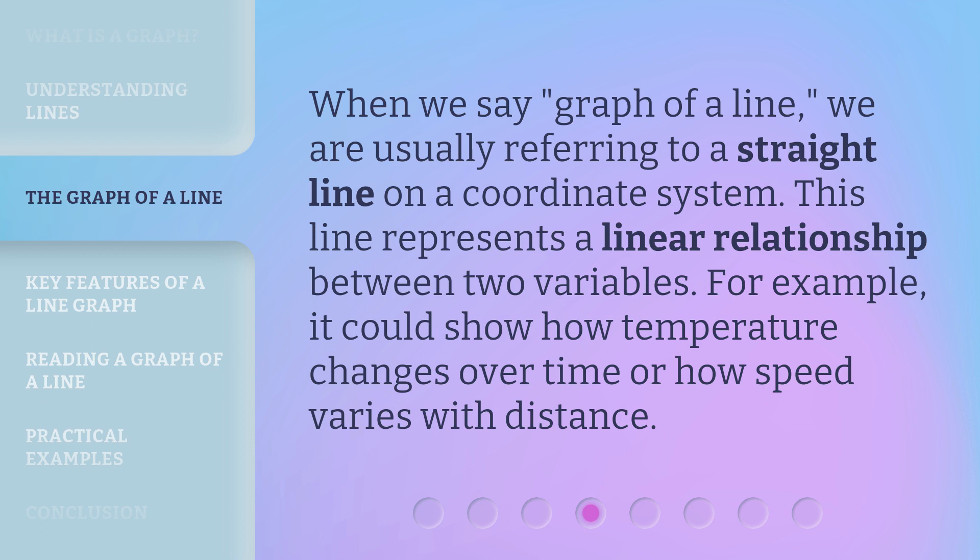When we say 'graph of a line,' we are usually referring to a straight line on a coordinate system. This line represents a linear relationship between two variables. For example, it could show how temperature changes over time, or how speed varies with distance.